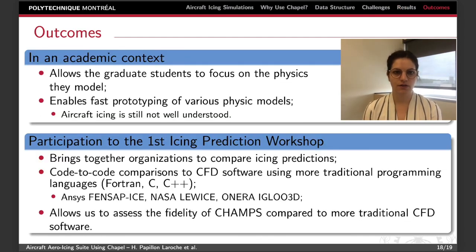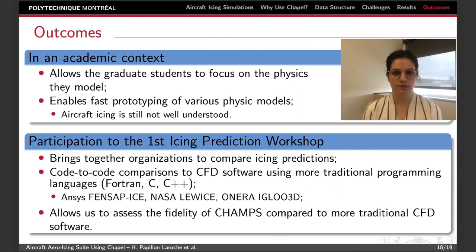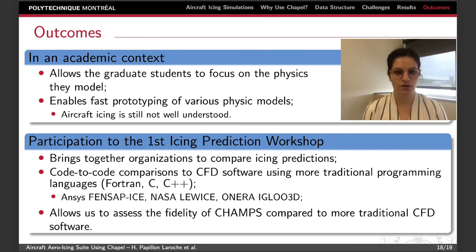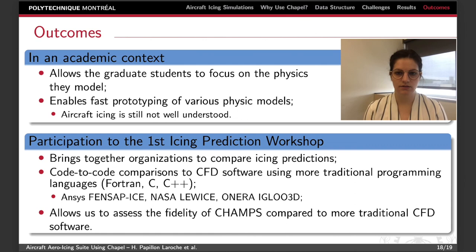So with those results, what are the outcomes of our work with JAPL? In an academic context, the framework provided by JAPL allows us to focus on the physics we have to model and it enables fast prototyping of a variety of physical models. This brings us to our participation in the first icing prediction workshop at the end of July. The workshop will bring together different organizations to compare the icing predictions of well-established CFD codes. It will allow us to assess the fidelity of CHAMS compared to more traditional CFD codes such as ANSYS, NASA, and ONERA codes. That concludes my presentation and I will be available to answer your questions. Thank you very much for your attention.